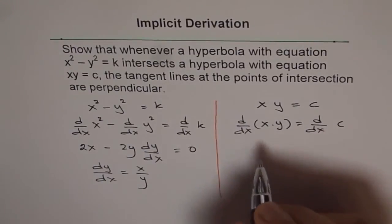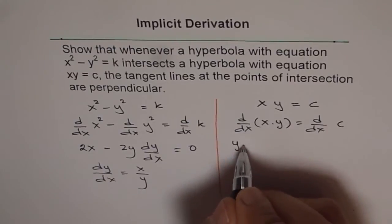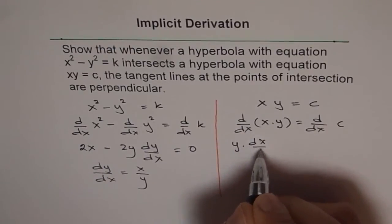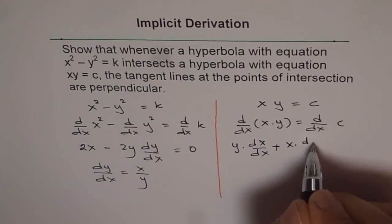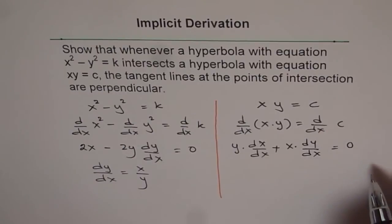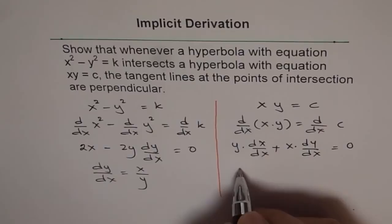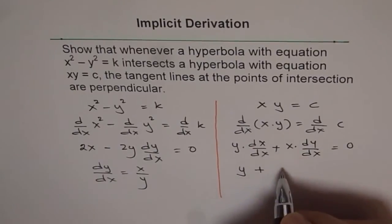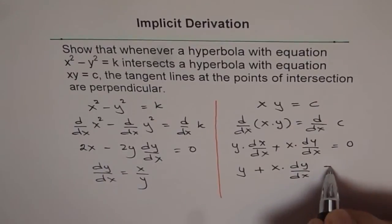Now we'll apply the product rule, which says derivative of this times y. So let me write y times dx/dx, plus x times dy/dx, equals to derivative of a constant is 0. So this term dx/dx is 1, so we get y plus x times dy/dx equals 0.